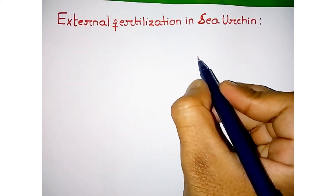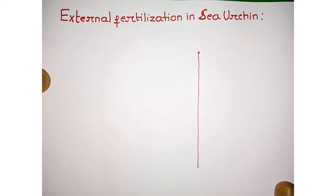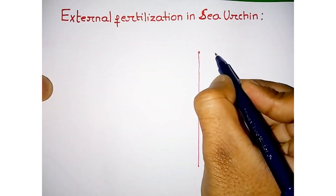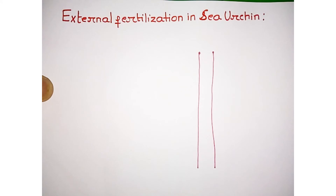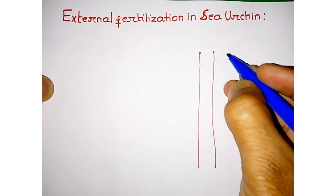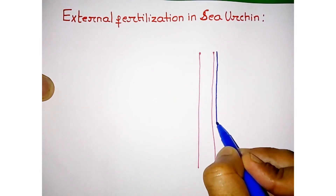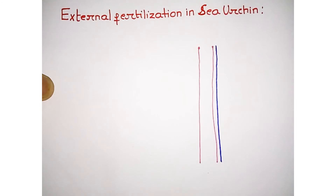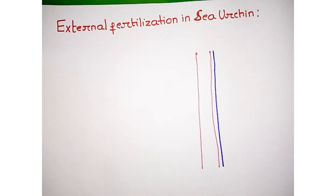Suppose this is a layer — a layer of egg. This is the egg vitelline envelope. On the inner side of the egg vitelline envelope there is a layer that is the egg cell membrane. Now we draw the sperm of the sea urchin.